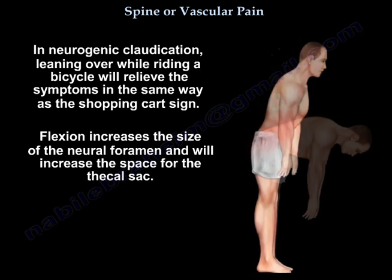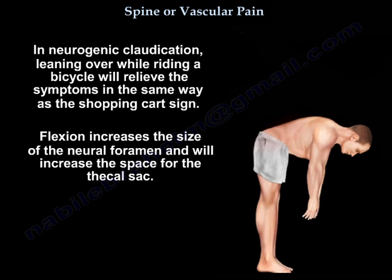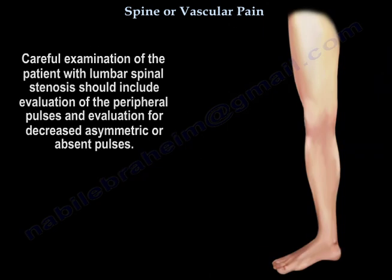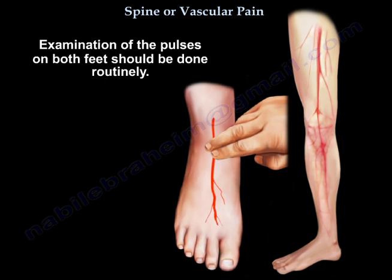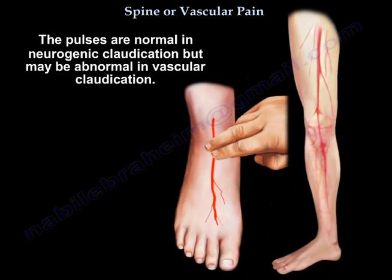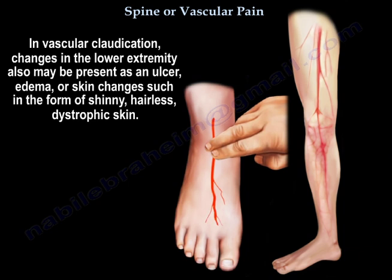Flexion increases the size of the neural foramen and will increase the space for the thecal sac. Careful examination of the patient with lumbar spinal stenosis should include evaluation of the peripheral pulses, looking for decreased, asymmetric, or absent pulses. Examination of the pulses on both feet should be done routinely. Pulses are normal in neurogenic claudication but may be abnormal in vascular claudication. In vascular claudication, changes in the lower extremity may also be present, including ulcers, edema, or skin changes in the form of shiny, hairless, dystrophic skin.